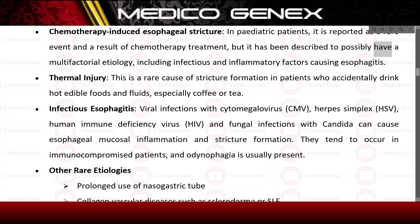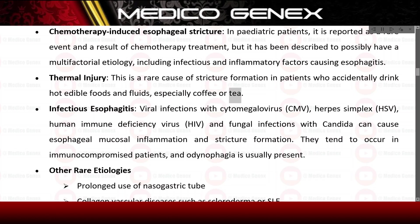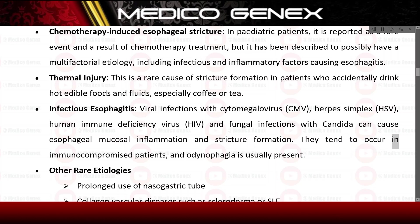Chemotherapy-induced stricture has been described as possibly having a multifactorial etiology, including infectious and inflammatory factors causing esophagitis. Thermal injury is a rare cause of stricture formation in patients who accidentally drink hot foods and fluids, especially coffee or tea. Infectious esophagitis from viral infections — CMV, HSV, HIV — and fungal infections with Candida can cause esophageal mucosal inflammation and stricture formation, tending to occur in immunocompromised patients, in whom odynophagia is usually present.